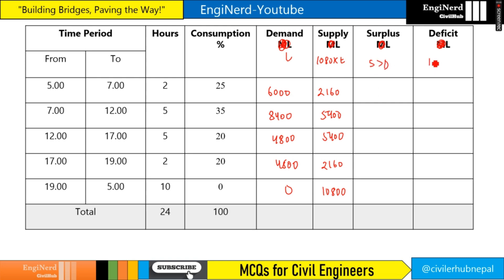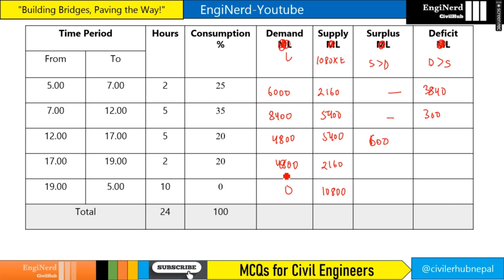Surplus is when supply is greater than demand, and deficit is when demand is greater than supply. For the first period, demand is greater, so deficit = 6,000 − 2,160 = 3,840 liters. Second period: 8,400 − 5,400 = 3,000 liters deficit. Third period: supply is greater, so surplus = 5,400 − 4,800 = 600 liters. Fourth period: demand is greater, deficit = 4,800 − 2,160 = 2,640 liters. Last period: supply is greater, surplus = 10,800 liters.